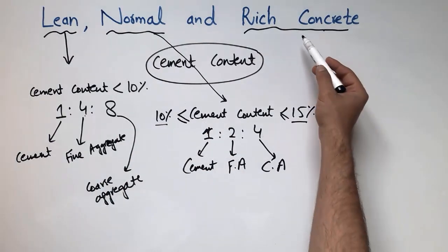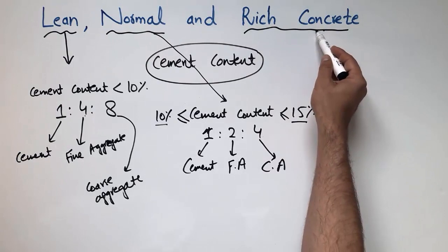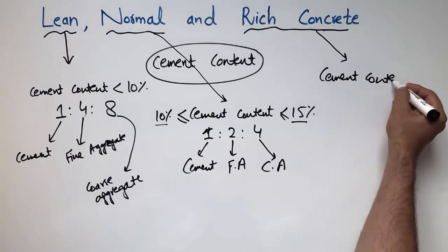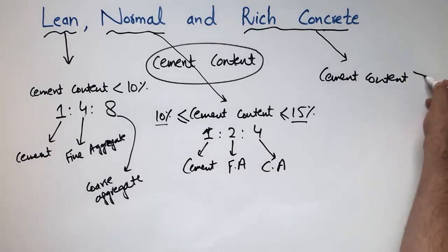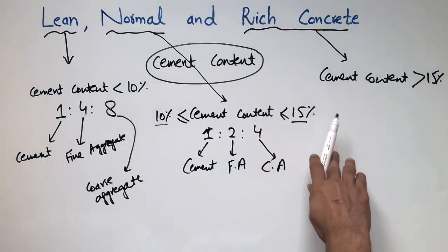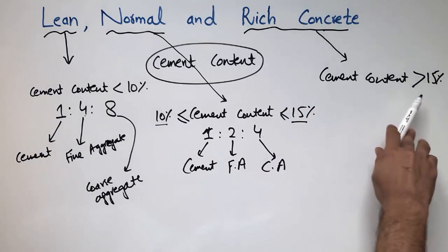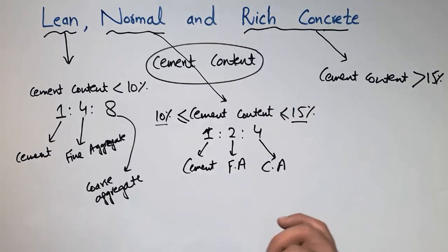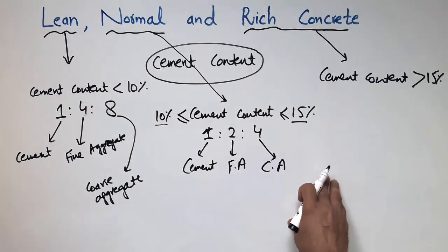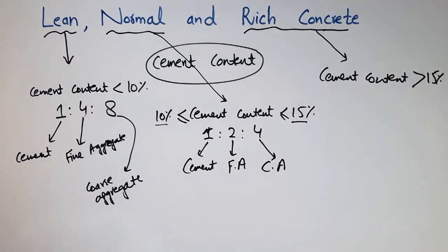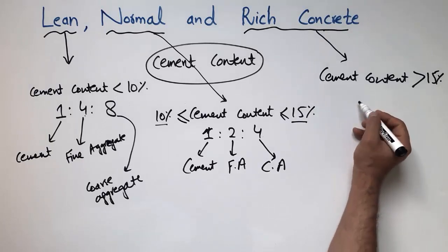The third and last type is called rich concrete. Rich concrete is the type in which the cement content is always greater than 15%. This concrete has the maximum cement content, greater than 15%, and it is used in mega structures such as high-rise buildings, multi-story buildings, bridges, and flyovers — structures that are subjected to high loading.